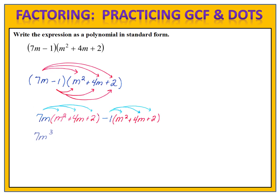Now let's do our distributing. 7m times m² is 7m³. 7m times 4m is 28m². 7m times 2 is 14m. Now we're on to the second set: negative 1 times m² is minus m². Negative 1 times 4m is minus 4m. And negative 1 times 2 is minus 2.